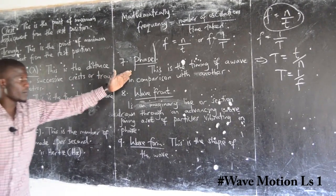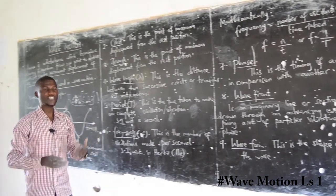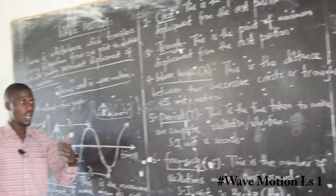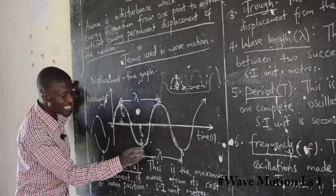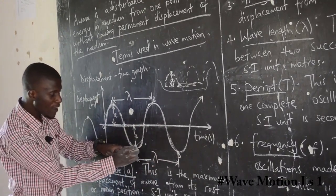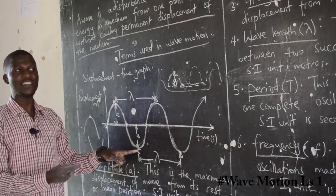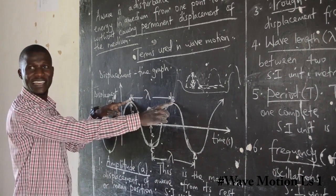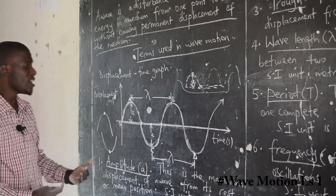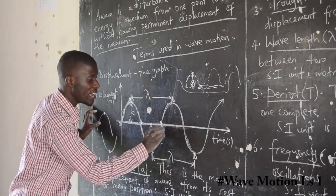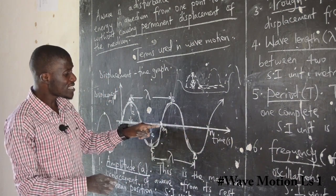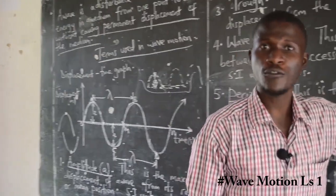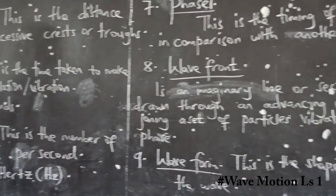Then we can look at what we mean by the term phase. Phase is the timing of a wave in comparison with another — you are timing the oscillation of one particle in comparison with another. For example, if you look at C and D on the diagram: if C is vibrating at the same position as D, these two particles are in phase. Similarly, if A and B are at the same position, A and B are in the same phase. Particles M and N placed at equivalent positions would also be in the same phase.